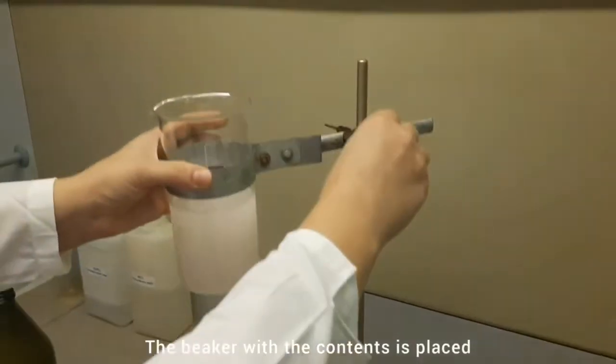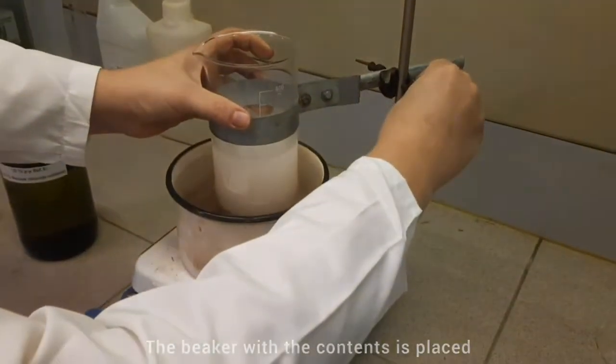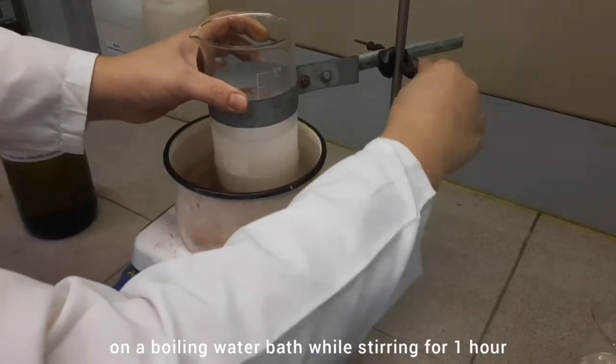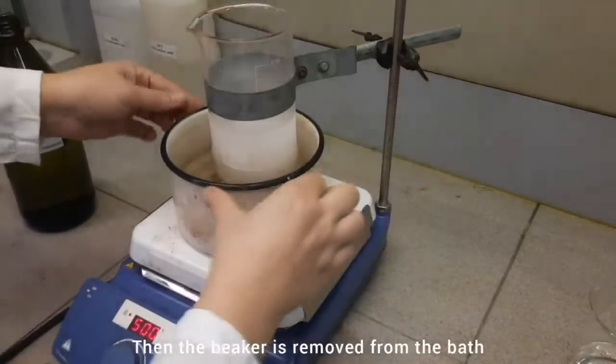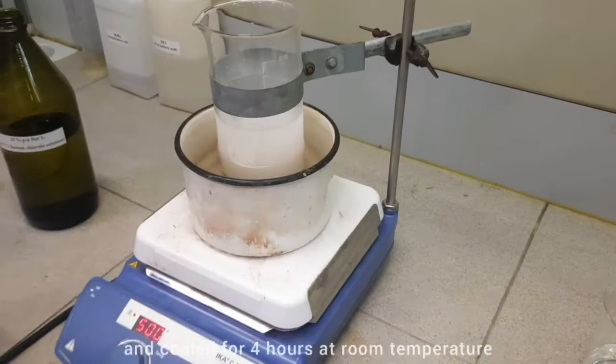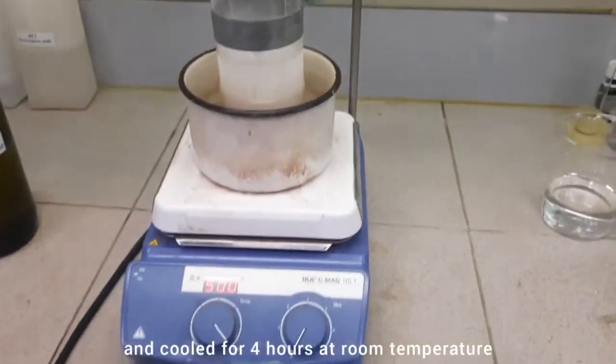The beaker with the contents is placed on a boiling water bath while stirring for 1 hour. Then the beaker is removed from the bath and cooled for 4 hours at room temperature.